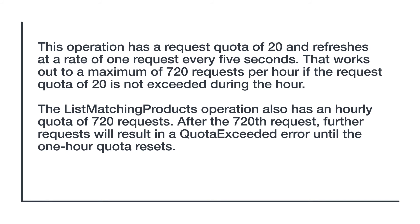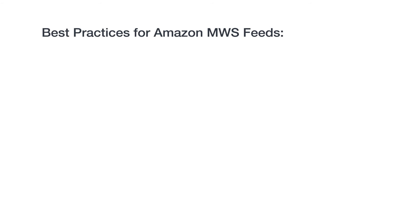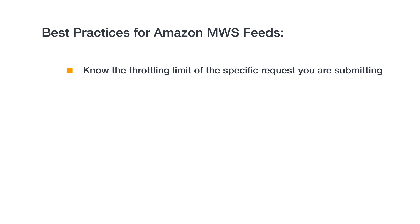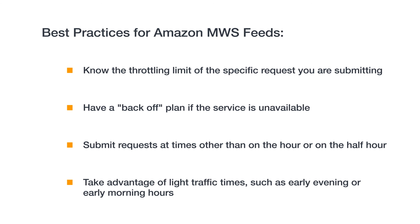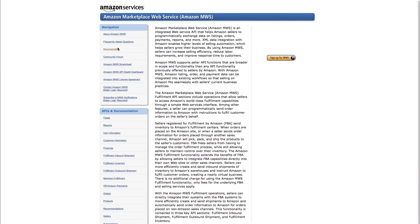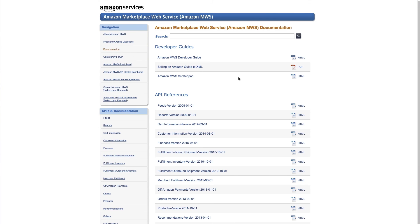After the 720th request, further requests will result in a quota exceeded error until the one-hour quota resets. Keep in mind the following to make sure your feeds and submissions are successfully processed: Know the throttling limit of the specific request you are submitting. Have a back-off plan for automatically reducing the number of requests if the web service is unavailable. The plan should use the restore rate value to determine when a request should be resubmitted. Submit requests at times other than on the hour or on the half hour — for example, at 11 minutes after the hour or 41 minutes after the hour. Take advantage of times during the day when traffic is likely to be low on MWS, such as early evening or early morning. You can find more information on throttling by navigating to developer.amazonservices.com and searching for the keyword throttling in the documentation section.